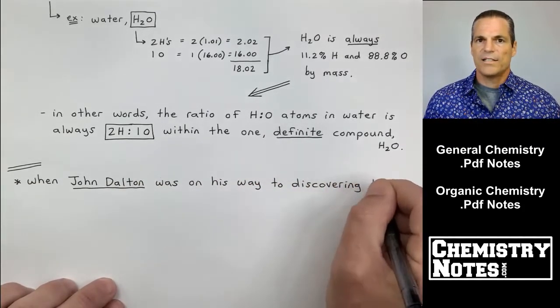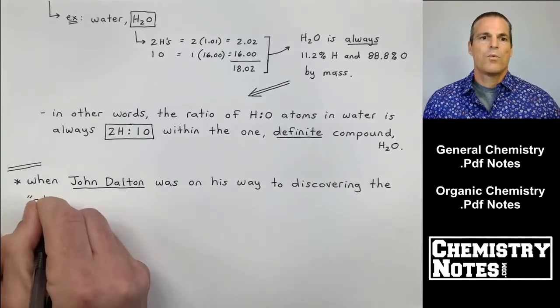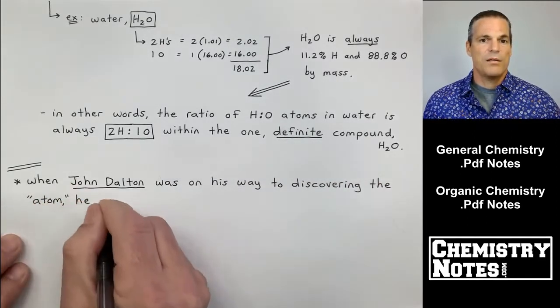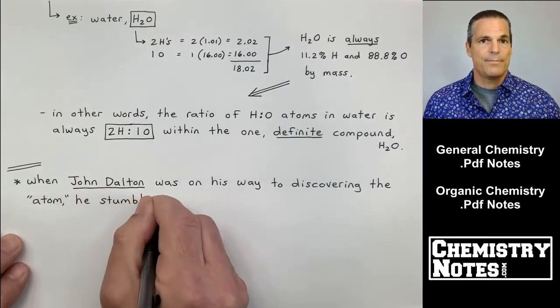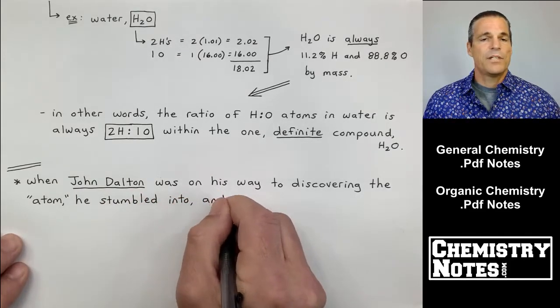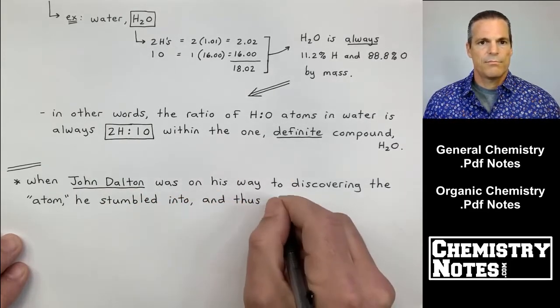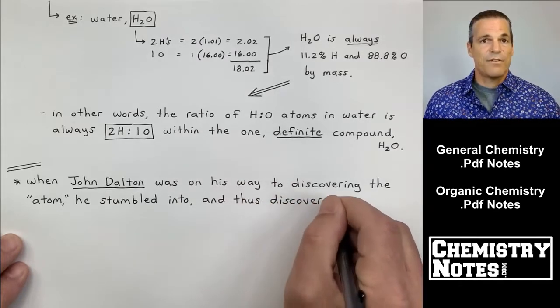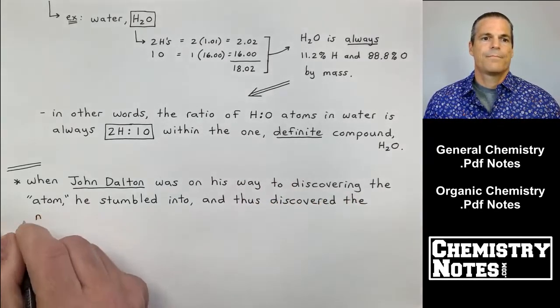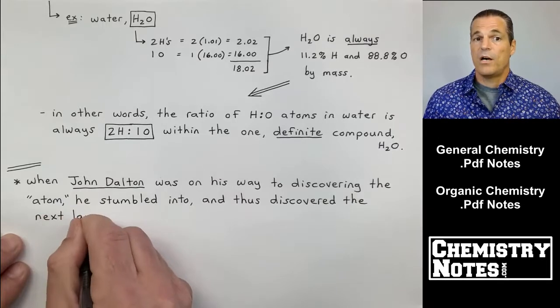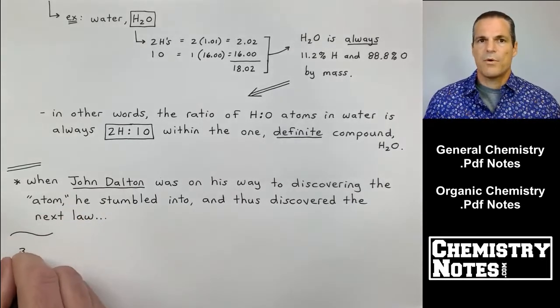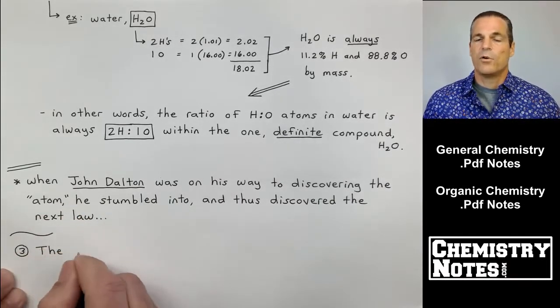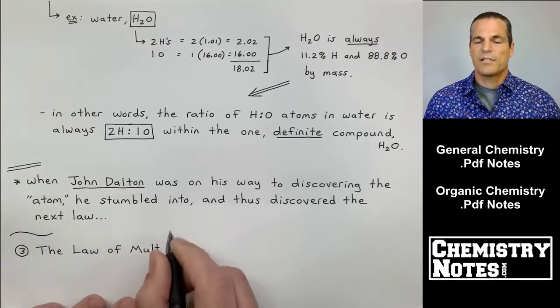Another name we've heard of Lavoisier, now John Dalton. When John Dalton was on his way to discovering the atom, he stumbled into and thus discovered the next fundamental law. And this is number three. This is the law of multiple proportions.